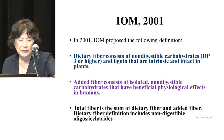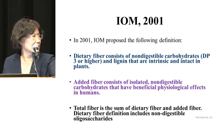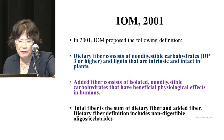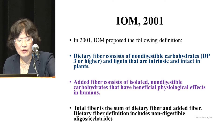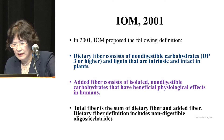In 2001, the Institute of Medicine proposed the following definition, with Dr. Joanne Slavin and Dr. Joseph Fahey as part of IOM. Dietary fiber consists of non-digestible carbohydrates with a DP (degree of polymerization) of three or higher, and lignin that are intrinsic and intact in plants. Added fiber consists of isolated non-digestible carbohydrates that have beneficial physiological effects in humans. Total fiber is the sum of dietary fiber and added fiber. This definition includes non-digestible oligosaccharides.